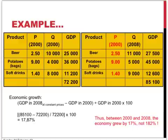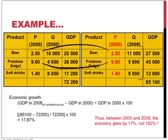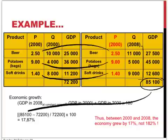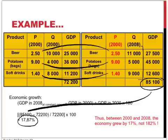We take the quantities produced in 2008 — 11,000 units of beer, 5,000 bags of potato, 9,000 units of soft drinks — and to calculate the value of the real GDP, we multiply those with the prices from the base year 2000. These prices are then used to get a GDP value of 85,100. This is used in the calculation of the growth rate, and the result is that over this period, the value of the increase in quantities produced is only 17%. It is much more realistic to say the economy grew by 17% over the period than 182%.